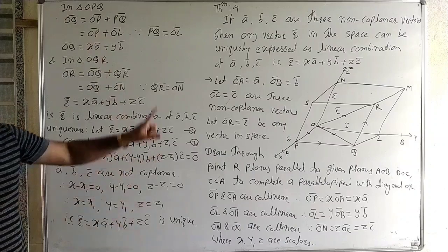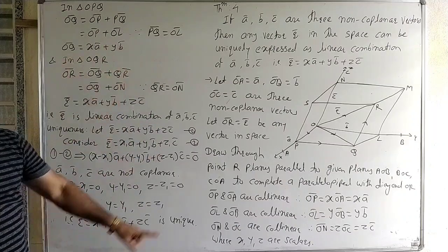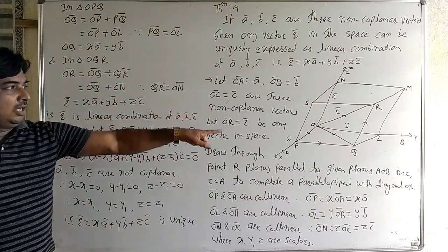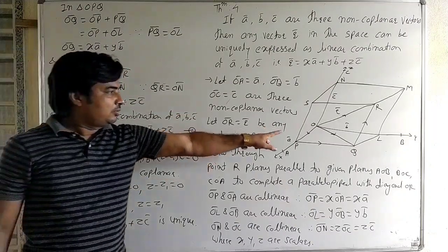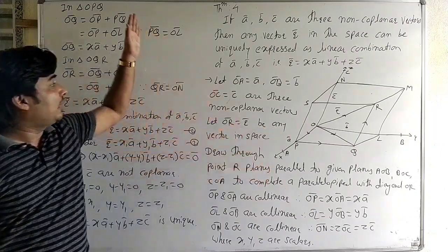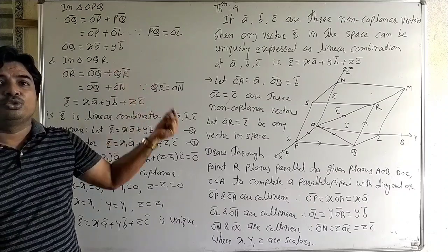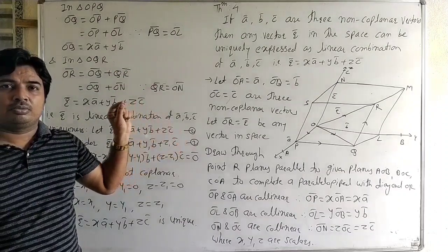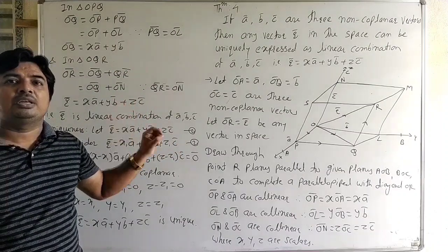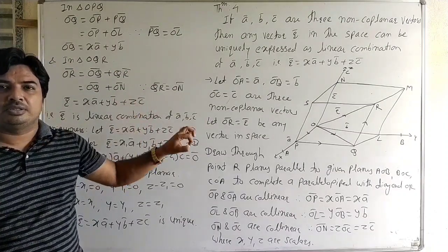This completes Theorem 4 using the concept of triangular addition. We have shown the position vector of a vector in three dimensions. You can check the third or fourth lecture of this vector chapter for the position vector of a point in three-dimensional geometry.